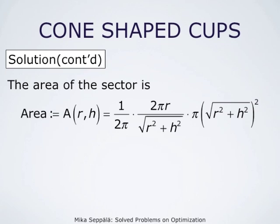The area of this sector is the angle of this sector divided by the full angle, times the area of the disc in question. The full angle is 2 pi, so we start by 1 divided by 2 pi times the angle of the sector, which was computed to be 2 pi r divided by square root of r squared plus h squared, times the area of the disc.